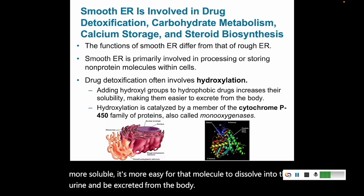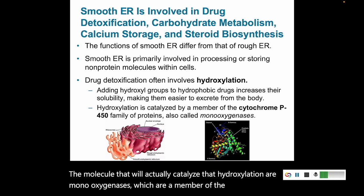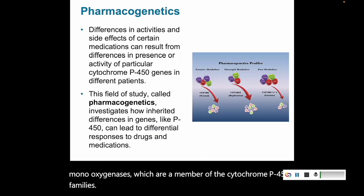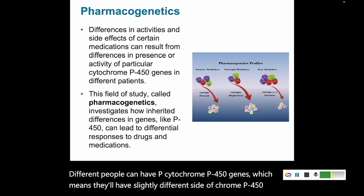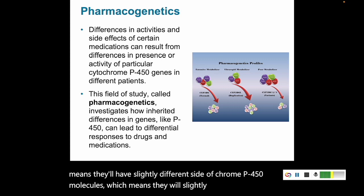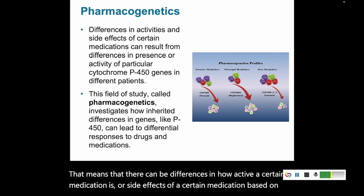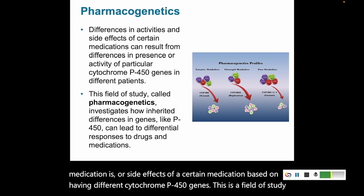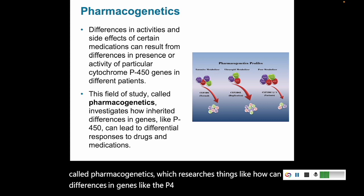The molecules that catalyze hydroxylation are monooxygenases, which are members of the cytochrome P450 family. Different people can have different cytochrome P450 genes, meaning slightly different cytochrome P450 molecules, which means they will differ slightly in how they hydroxylate toxins. This can lead to differences in how active a certain medication is, or differences in side effects, based on having different cytochrome P450 genes.